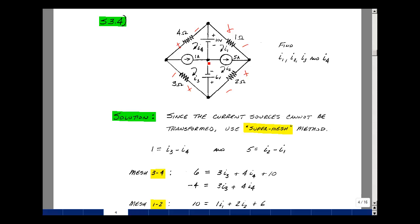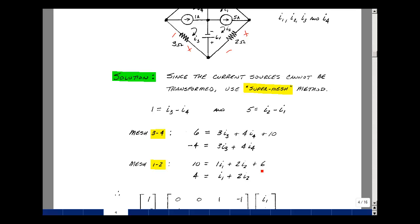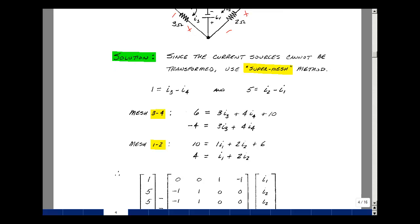So whether you go around counterclockwise or clockwise and put the rises on one side, drops on the other, bring the 6 on our side, it becomes 4, and then we have I1 plus 2I2. Now we have our fourth equation in four unknowns.